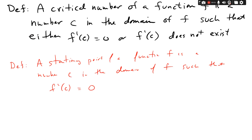Here are the formal definitions. Definition one: a critical number of a function f is a number c in its domain such that either the derivative at c equals zero, or the derivative does not exist. Definition two: a stationary point of a function f is a number c in the domain such that the derivative at c equals zero. So saying 'stationary point' means the derivative is exactly zero; saying 'critical point' or 'critical number' means the derivative is either zero or does not exist.